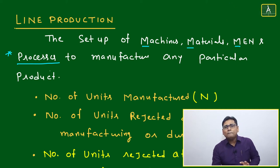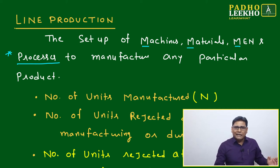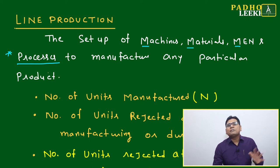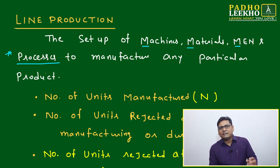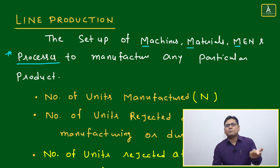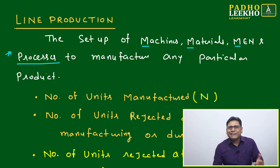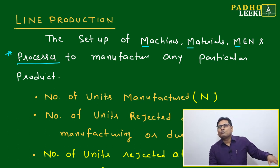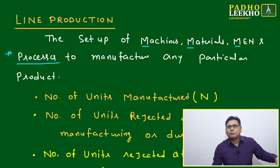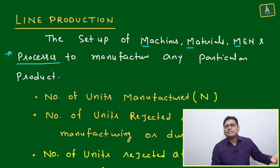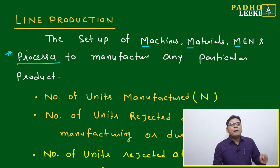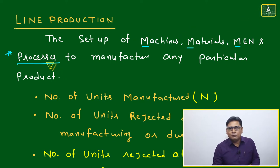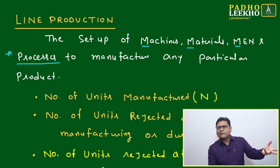Before processes, planning happens. Once planning is done, processes are decided: how to make a product step by step — step one, step two, step three. For example, first drilling then milling, or for electrical equipment a different sequence, or for civil manufacturing yet another type. Processes define which type of machine, material, and man will be required.